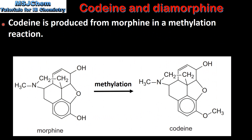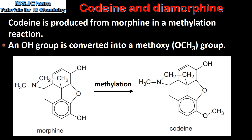Next we look at the synthesis of codeine. Codeine is produced from morphine in a methylation reaction. In the reaction an OH, or hydroxyl group, is converted into a methoxy group. Here we can see the methylation reaction of morphine to produce codeine, in which this hydroxyl group is converted into a methoxy group.